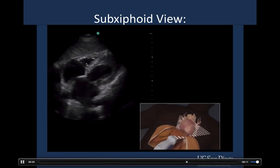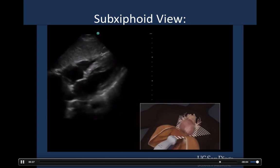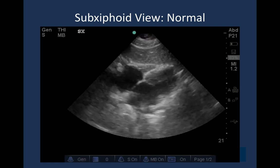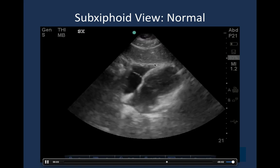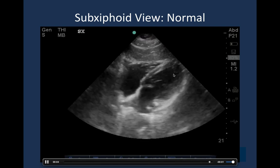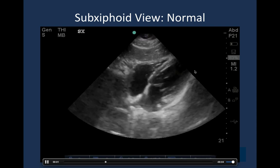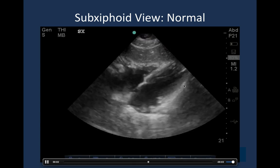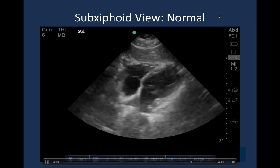Here is a normal sub-xiphoid view. You see liver, pericardium and diaphragm abutting one another, right ventricle, right atrium, septum, left ventricle, left atrium, and a bit more pericardium. This bright white line is the pericardium. When looking for pericardial effusion, instead of a tight bright white line, you'll see a black anechoic stripe collecting behind the heart — which we don't have in this example. This is a normal sub-xiphoid view.